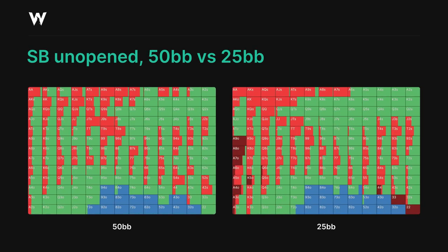These hands are primarily limping with intent to fold to a raise, and they don't even have enough postflop playability or blocking power for us to raise them at any frequency. Next, let's compare 50 big blinds with 25 big blinds, crossing over our next pivot point which was at the 35 big blinds stack size. The previous trends have been amplified even further here and we now have an all-in shoving range on top of our raising range.